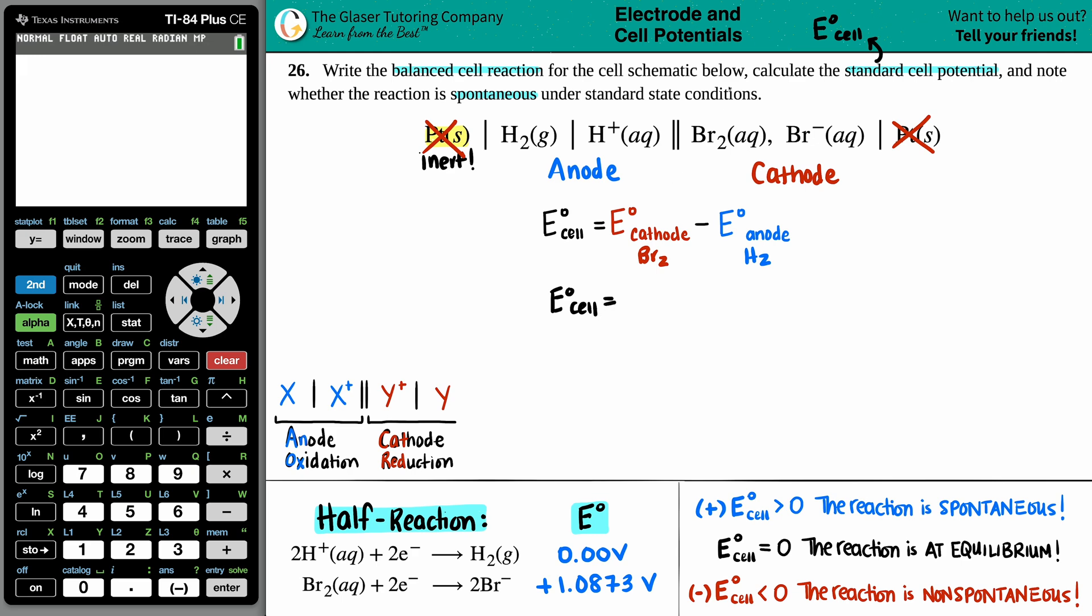So I'm just going to go straight for it. The E-cell for this would be the cathode. The bromine value is 1.0873. And that's minus zero, right? This one has no potential. Zero straight across the board. So even if I did 1.0873, I have the calc. Might as well plug it in, but we all know it's going to be the same number.